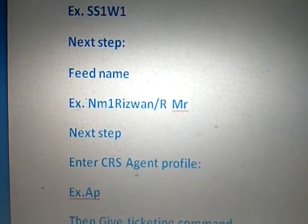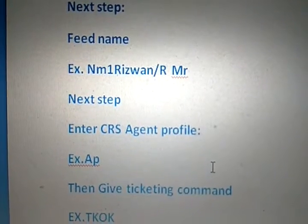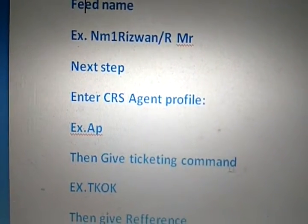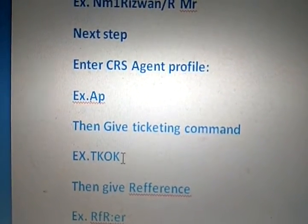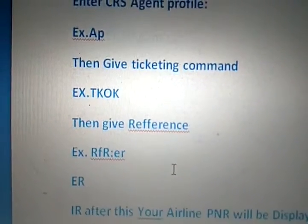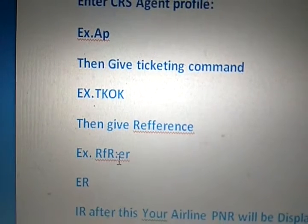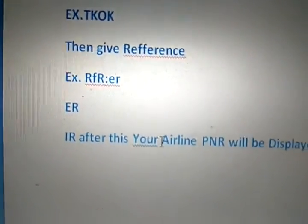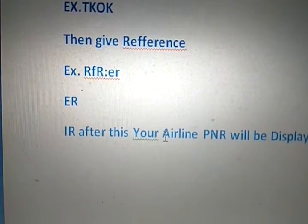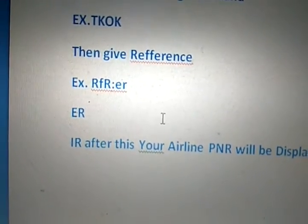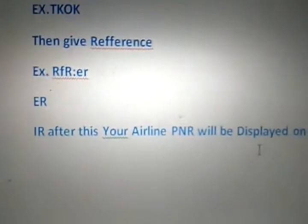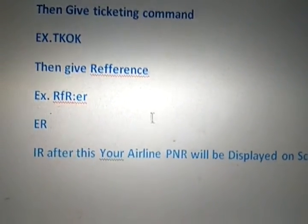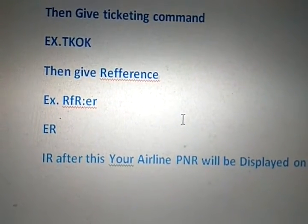Then enter the CRS agent profile, for example AP, then enter. Give the ticketing command, for example TK OK, then give the reference entry RF followed by your initials. After entering all these entries and commands, your airline PNR will be displayed on the screen. Thank you for watching this video.